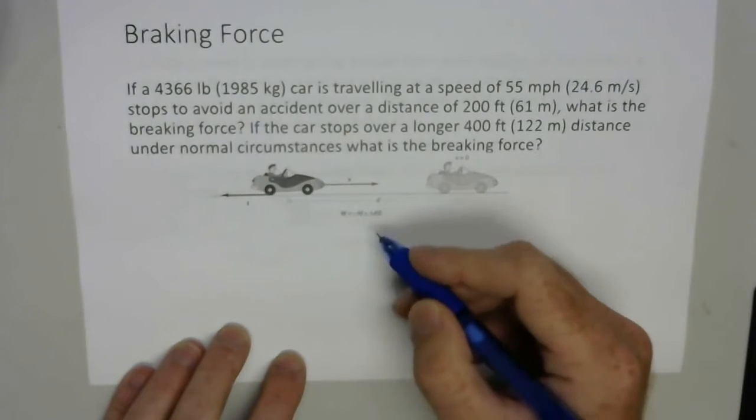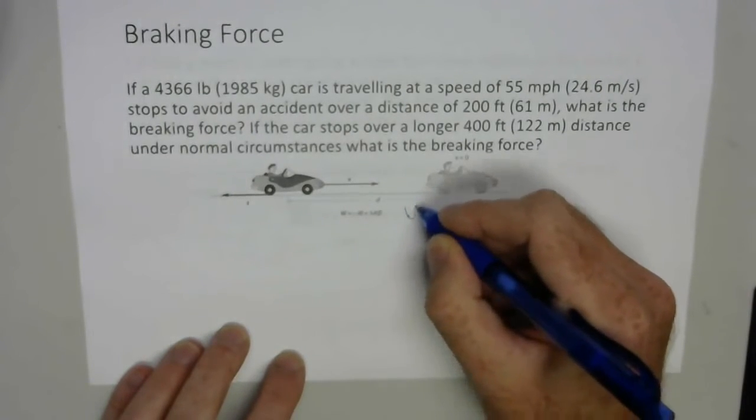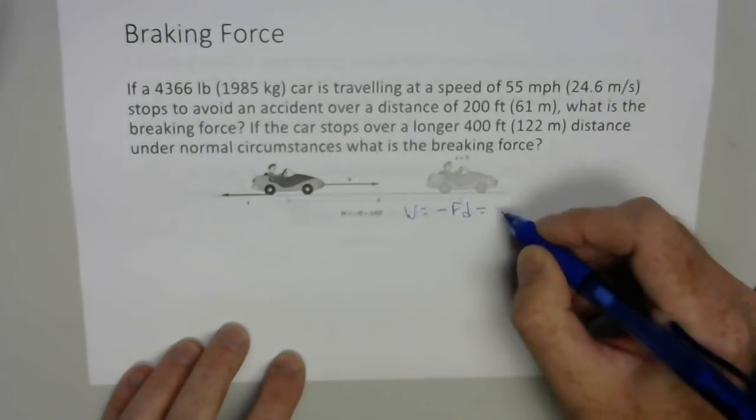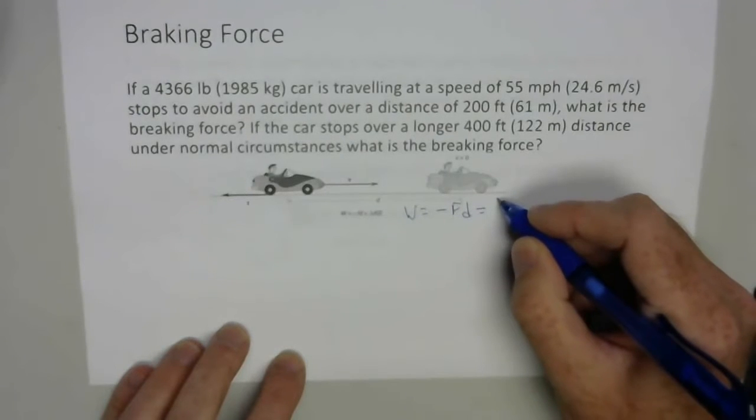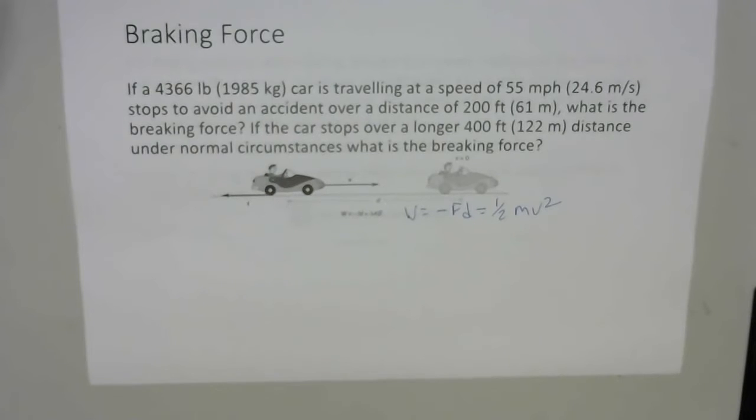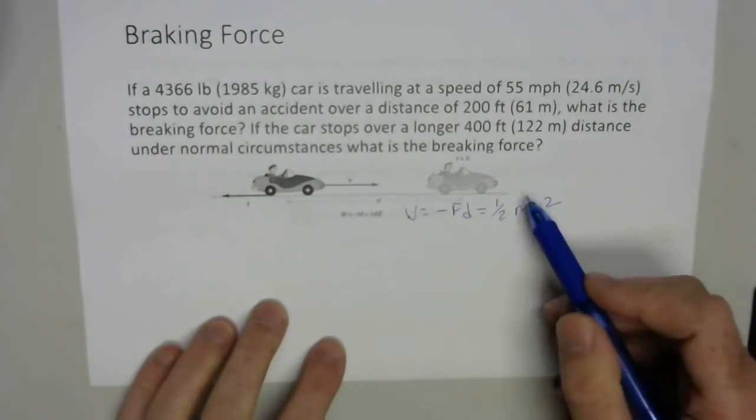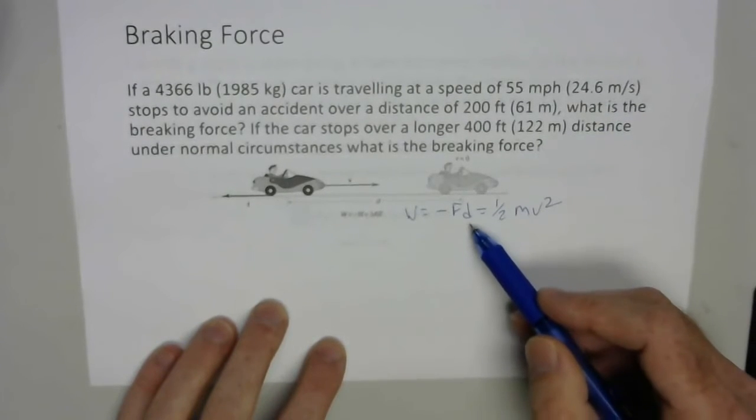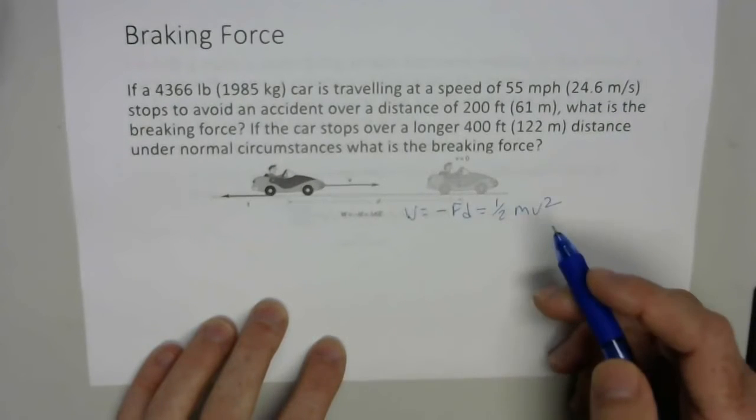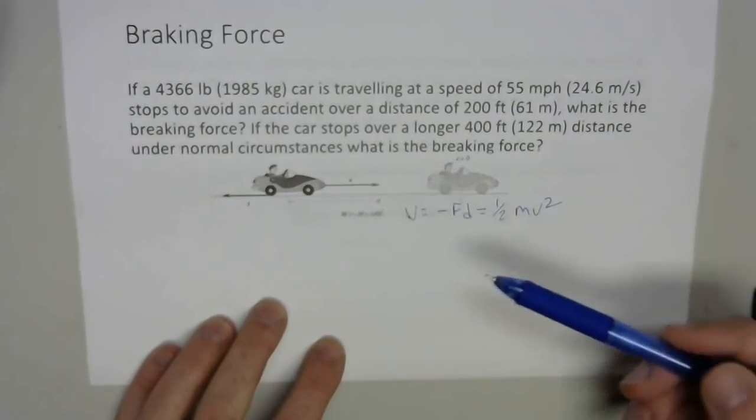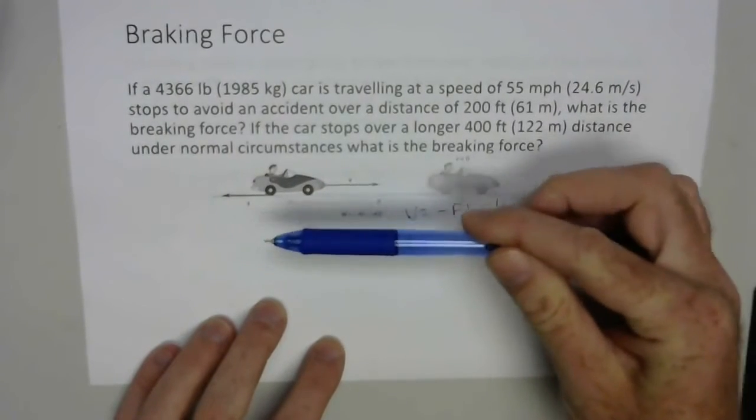In this case, we're using this equation down here where the work is equal to the negative force times the distance, and we're setting that equal to the change in kinetic energy, which is one-half mv squared. Now, once we have that relationship, we've got enough information to calculate the kinetic energy because we have the mass and the velocity, we know the stopping distance, we just need to solve it for the force. It's negative because I'm stopping and the work is opposing the direction of the motion of the car.